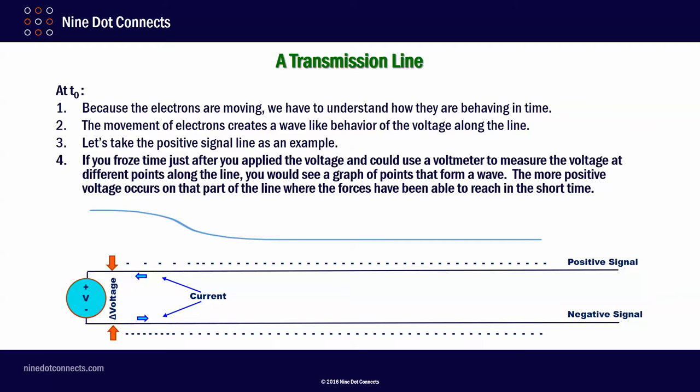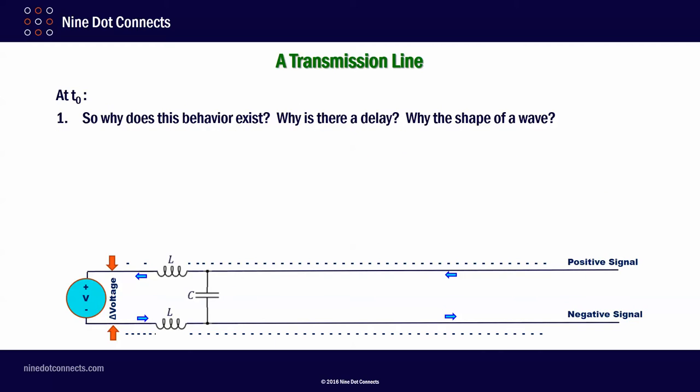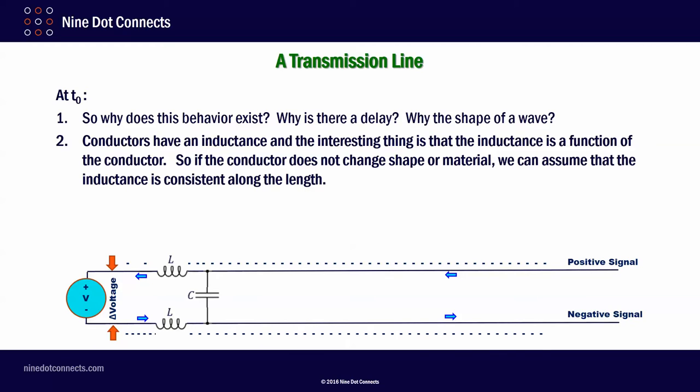Again, we are still at T0. Because the electrons are moving, we have to understand how they are behaving in time. The movement of electrons creates a wave-like behavior of the voltage along the line. So, now let us take a positive signal line as an example. If we were to freeze time, just after you applied the voltage, and you could use a voltmeter and measure the voltage at different points along the line. And what I mean by that is, you put the positive lead on the positive signal wire, you put the negative lead on the negative signal wire, so that you have something referenced to each other. The more positive voltage occurs on that part of the line where the forces have been able to reach in that very short time that the applied voltage has been there. And if you took that voltmeter and you actually were able to keep time frozen, but move the voltmeter down along this direction, that voltage would decrease. So, why does this behavior exist? Why is there a delay? Why the shape of a wave?